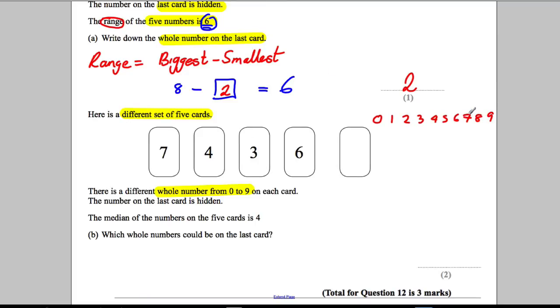We have already used 7. We have already used 4. We have already used 3. And we have already used 6. So this card must be a 0, 1, 2, 8, or 9. The number on the last card is hidden. The median of the 5 cards is 4.